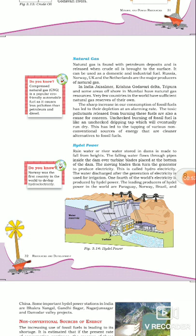Russia, Norway, UK, and the Netherlands are the major producers of natural gas in the world.